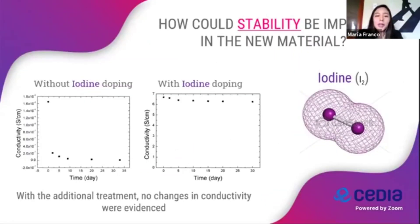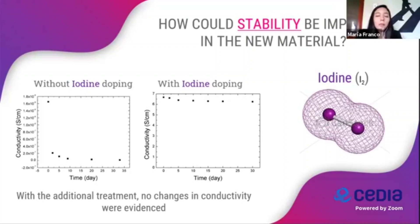How could stability be improved in the new material? There are certain factors to improve stability that depend on the properties of the material. In this case, to achieve better stability in the electrical conductivity of the polymers, iodine was doped into the monomer film and the same treatment was carried out.